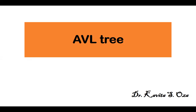Skew trees are generated when you use sorted data to create a binary search tree. But if you make sure that the height of the tree remains O(log n), even if you carry out any insertion and deletion, then we can have an upper bound of O(log n) for all these operations. Today we'll look at a tree whose height is always O(log n), and that is nothing but the AVL tree. Here, n is the number of nodes in the tree. An AVL tree is a binary search tree and it's a height balanced tree.